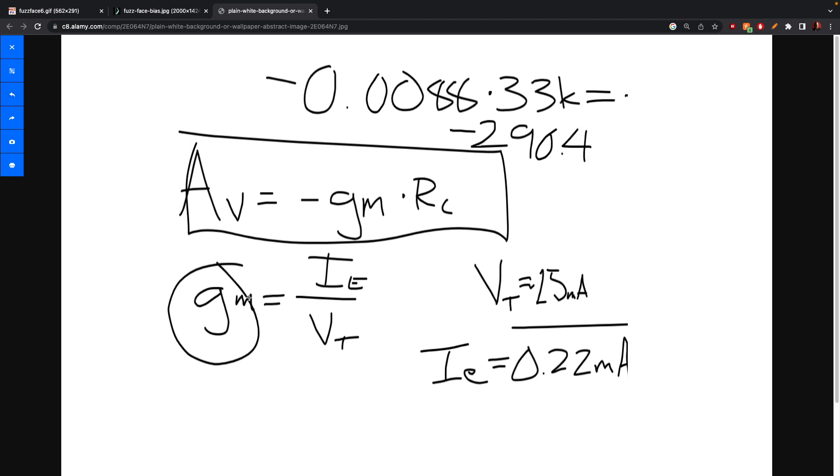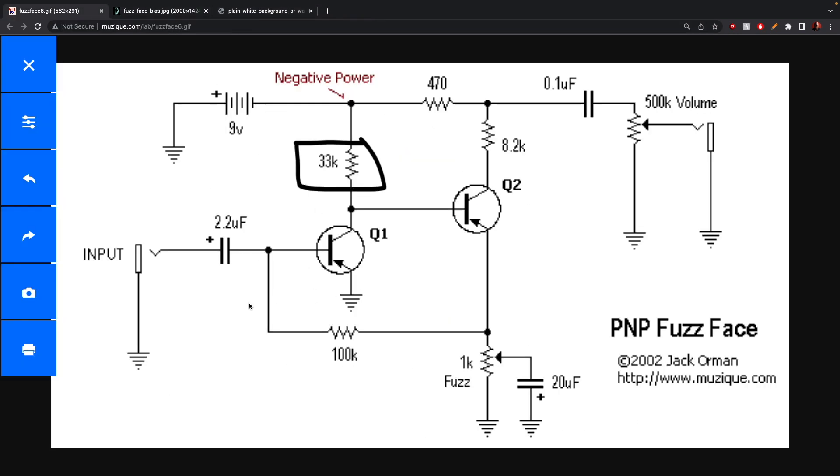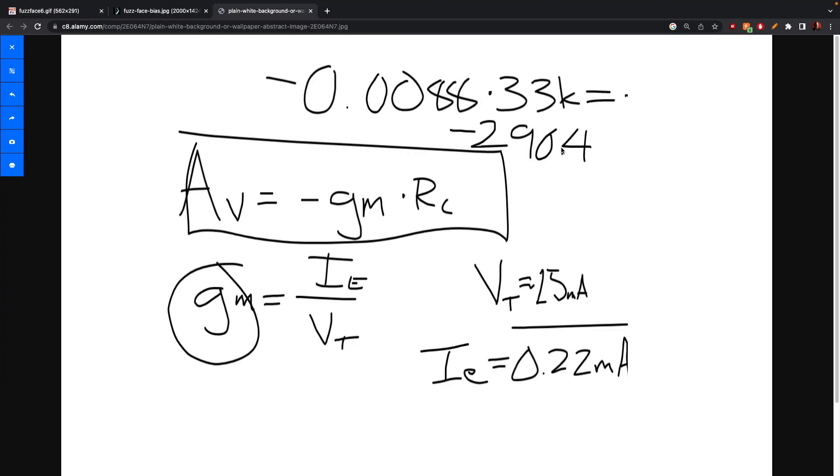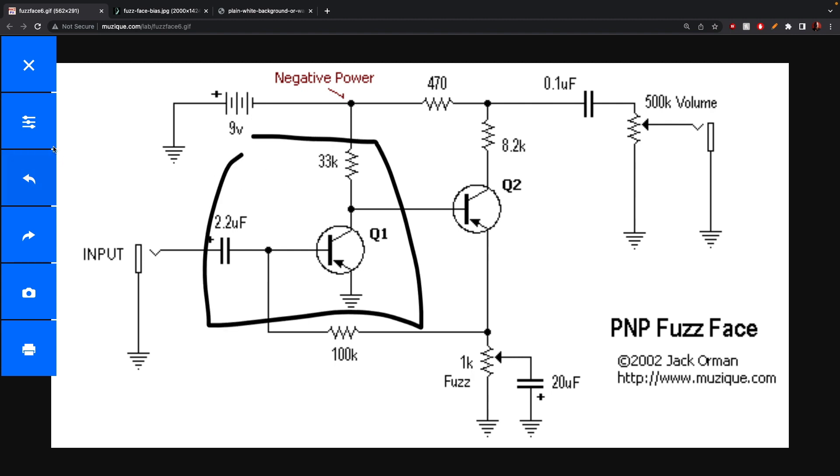However, that gets further reduced by this feedback path down here. This will reduce the gain and it has some other properties which we'll go through later. So that reduces the gain by about a hundred. So we end up with a gain of around 190. That's our approximate gain for stage one, for this common emitter amplifier right there.